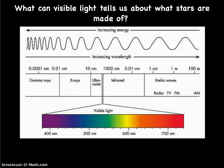So looking at that visible light again, we're going to look at our question: what can visible light tell us about what stars are made of? And focusing on the red, orange, yellow, green, blue, indigo, and violet that our eyes can detect.